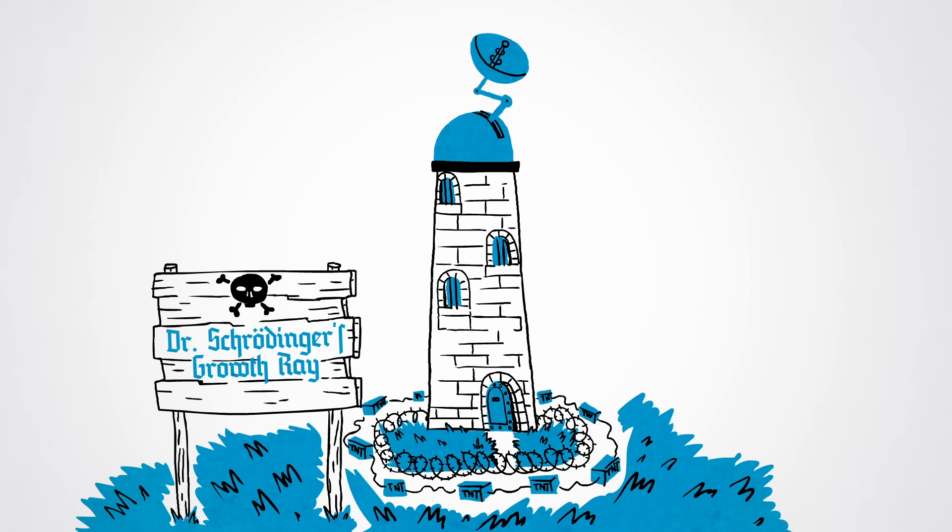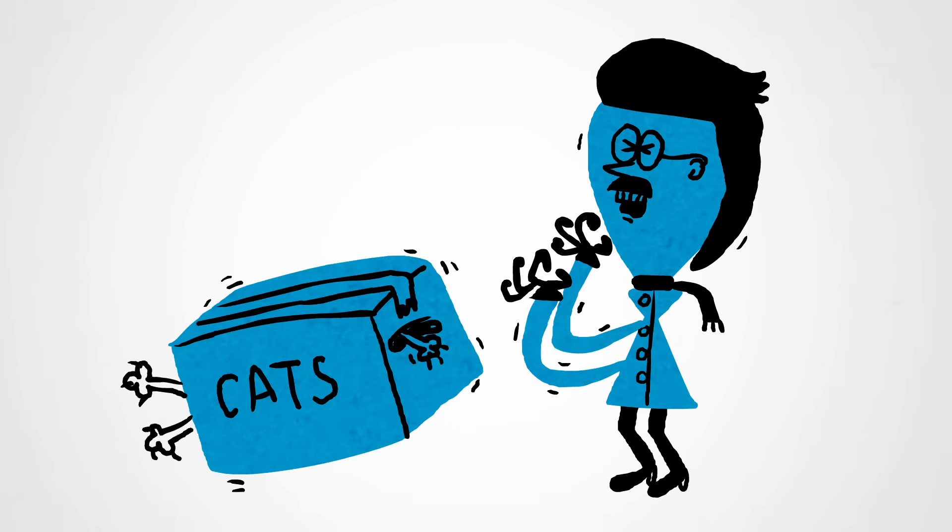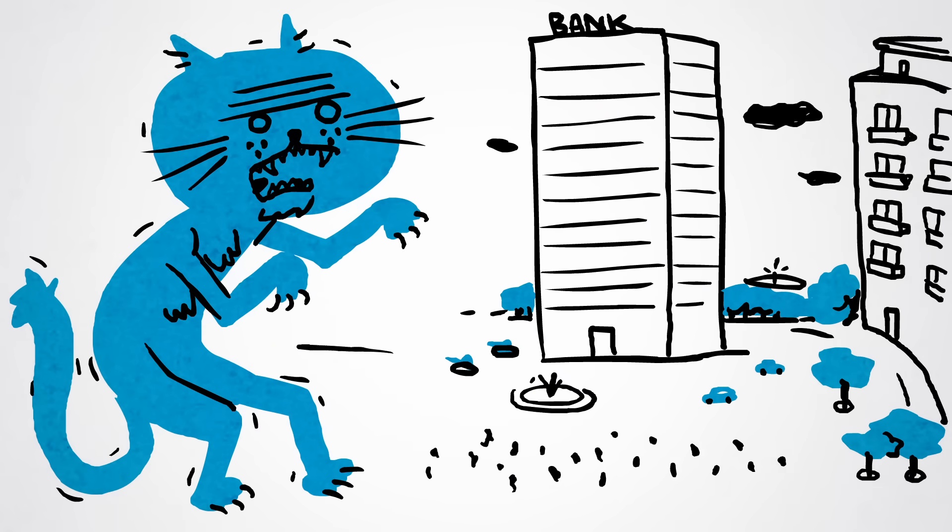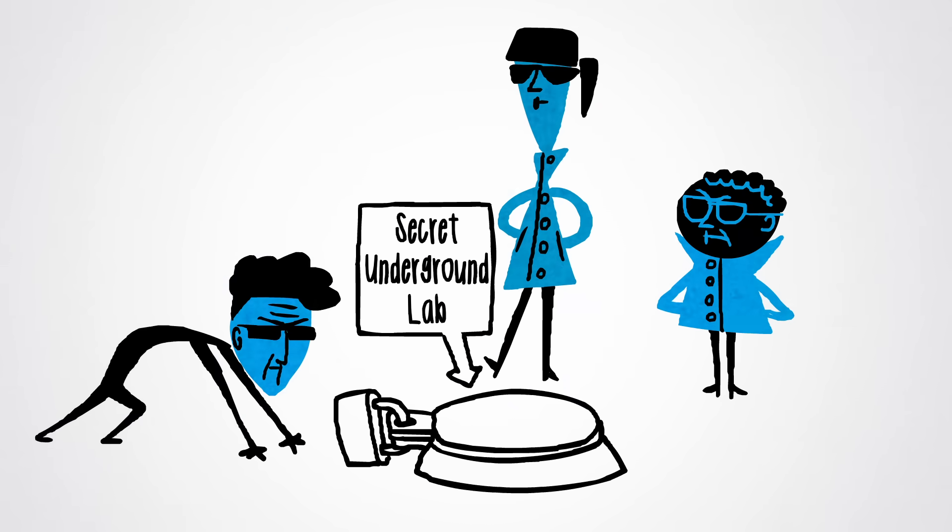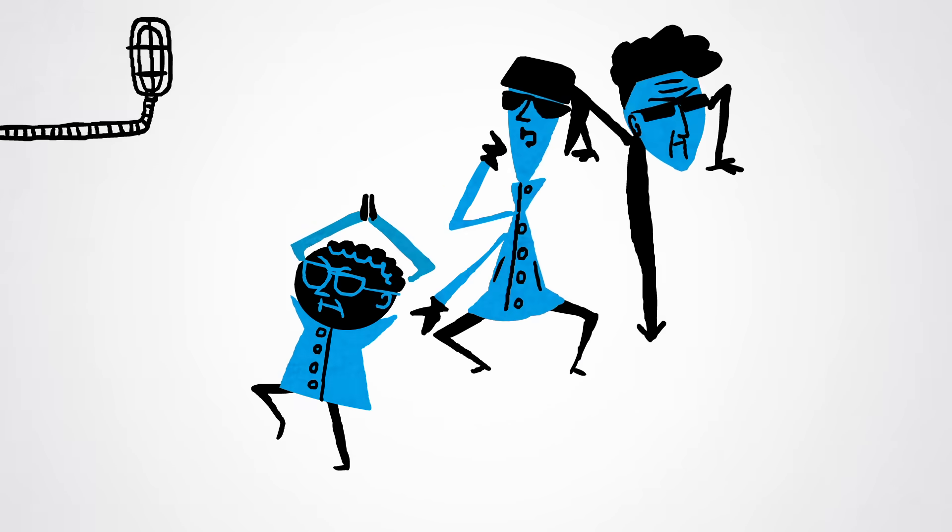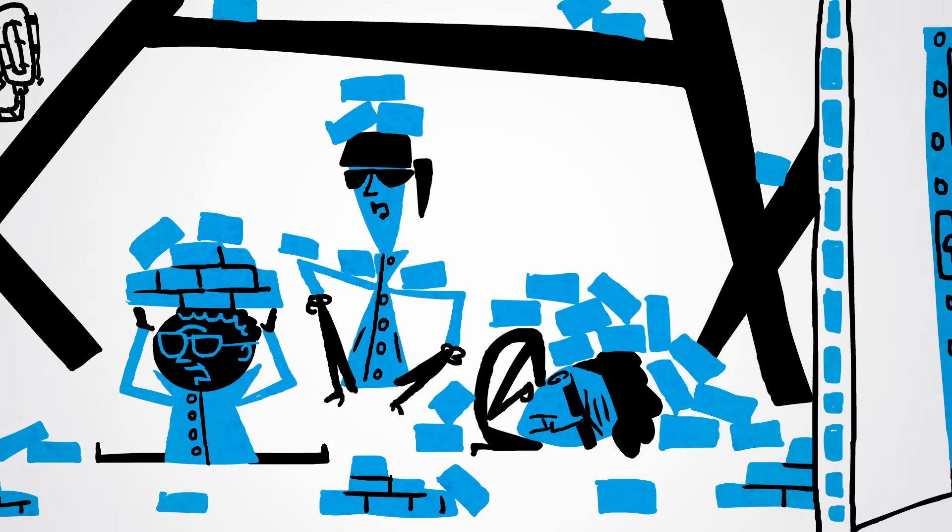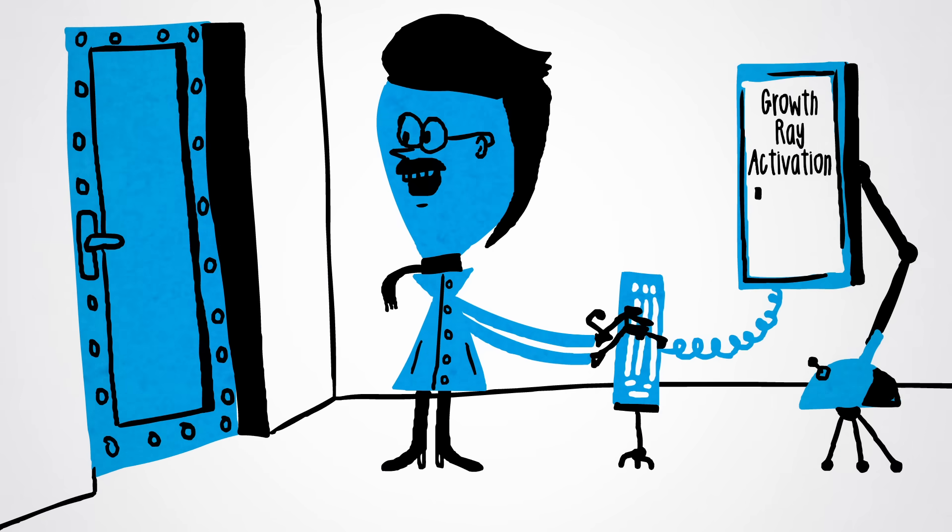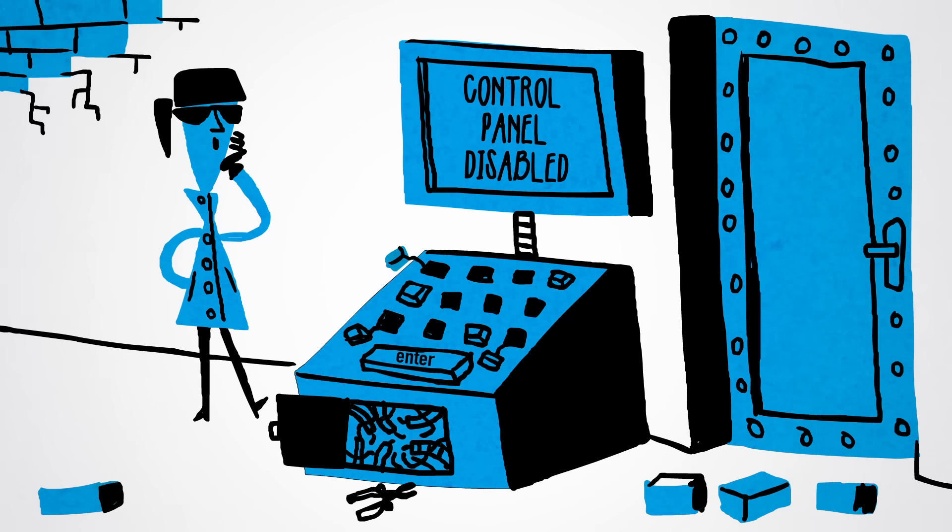The villainous Dr. Schrodinger has developed a growth ray and intends to create an army of giant cats to terrorize the city. Your team of secret agents has tracked him to his underground lab. You burst in to find that it's a trap. Dr. Schrodinger has slipped into the next room to activate his device and disabled the control panel on the way out.